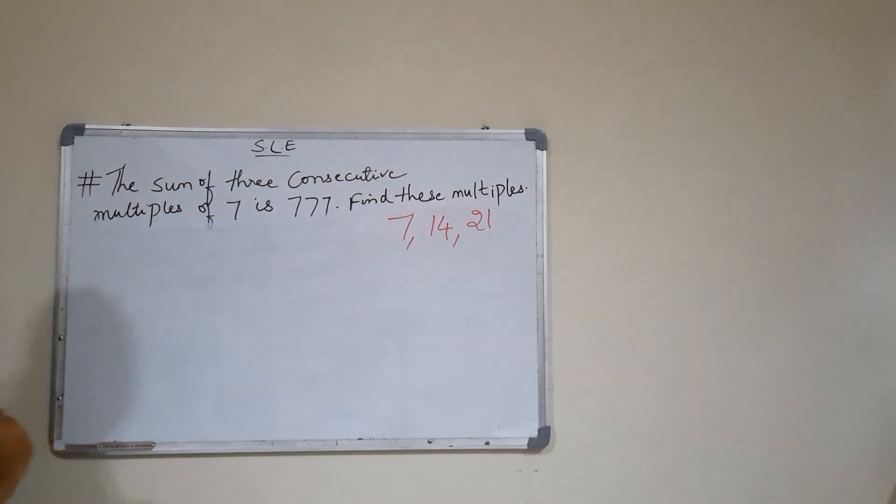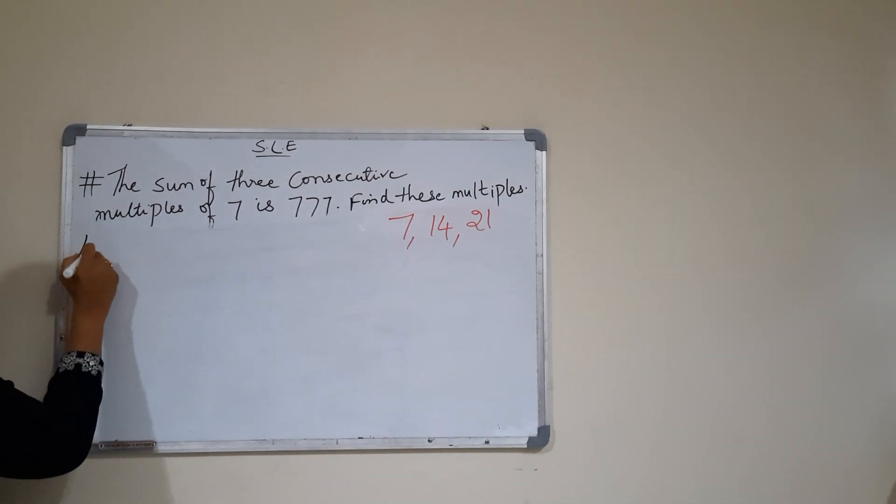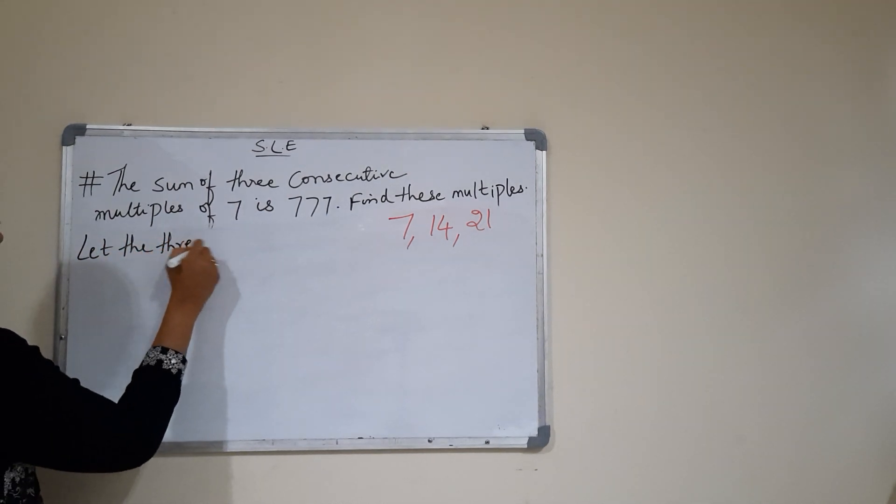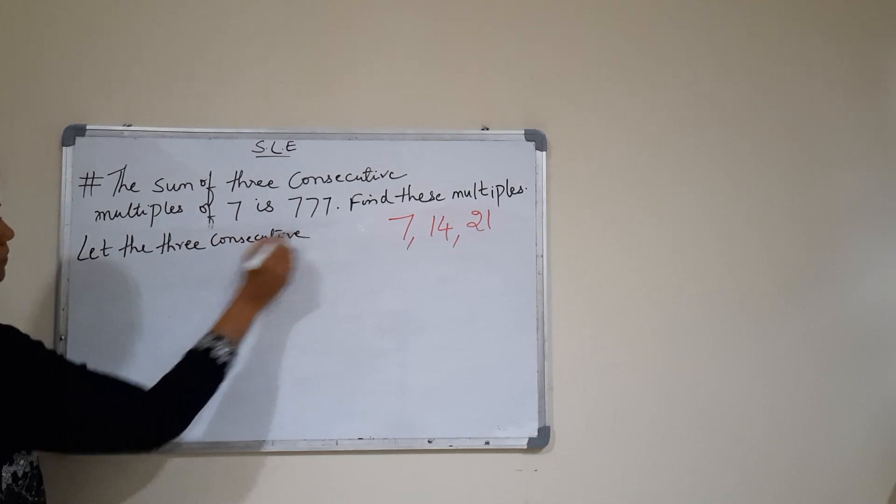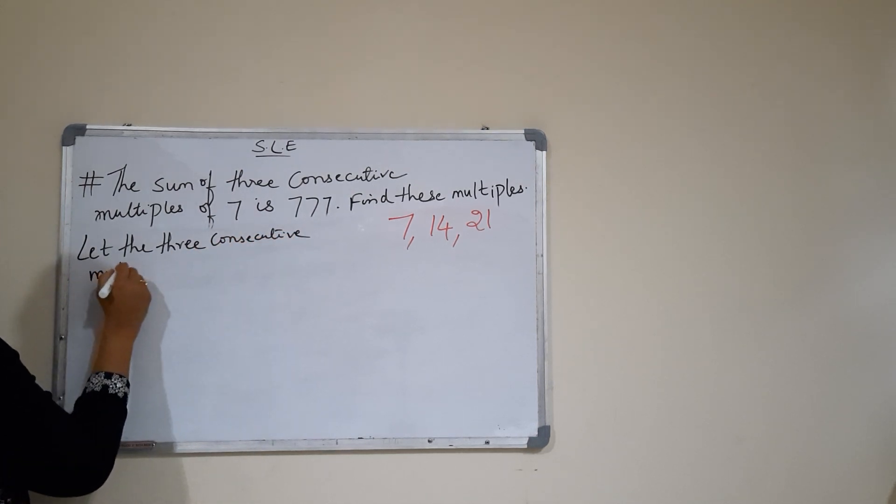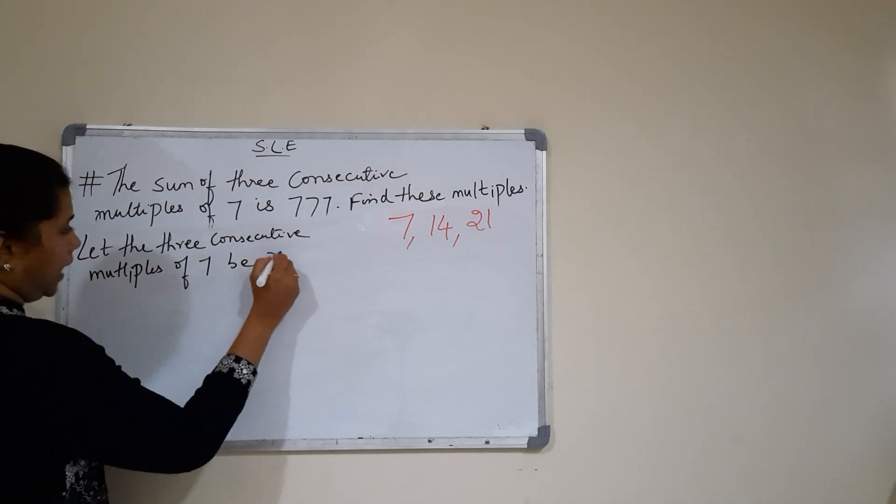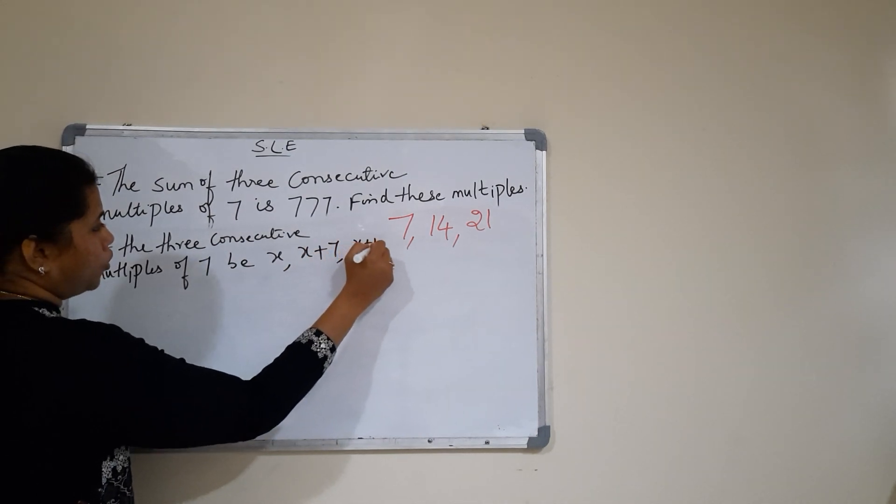Now I am going to write the steps for the problem given. Let the three consecutive multiples of 7 be x, x plus 7, and x plus 14.